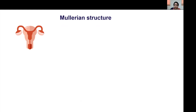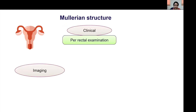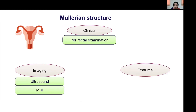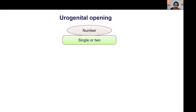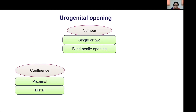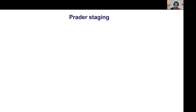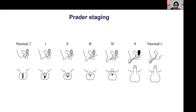During this presentation we are mainly focusing on clinical examination to broadly categorize DSD patients into XX or XY DSD. Mullerian structures can be identified using clinical examination, per rectal examination, ultrasound, or MRI imaging — and we may sometimes find a hemiuterus. The number and openings of the urogenital opening and the extent of confluence (proximal or distal) are important for surgical management. Masculinization in a female is determined using Prader staging, which extends from stage one (typical female phenotype) to stage five (male phenotype).